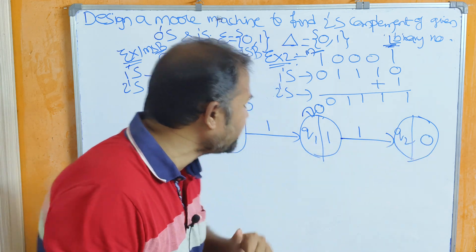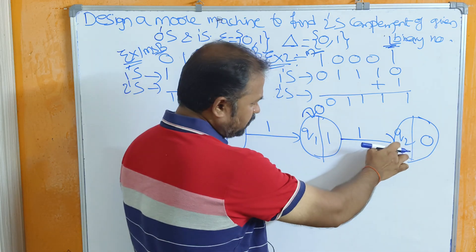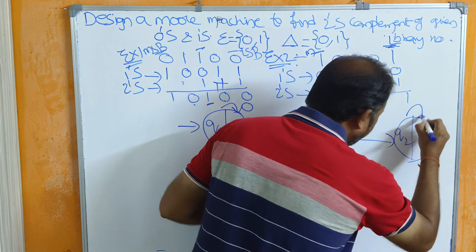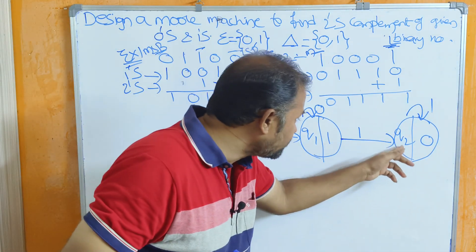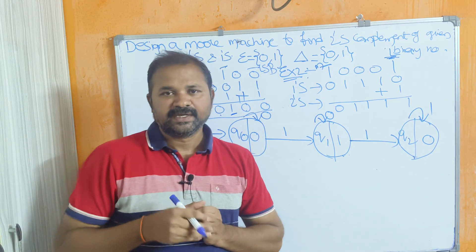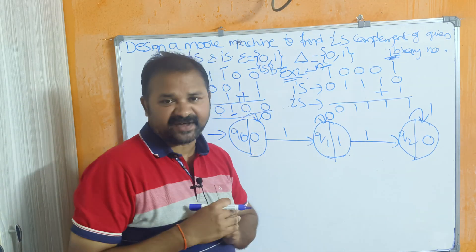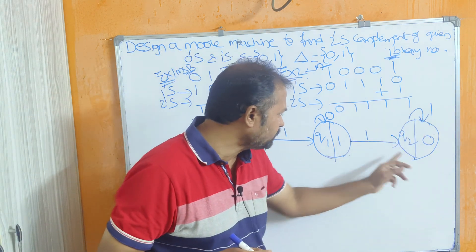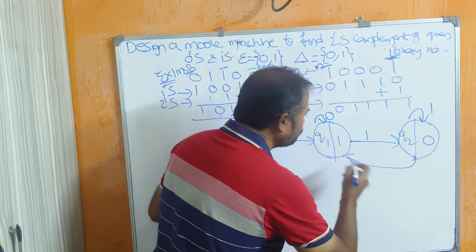Now we apply 0 and 1 on q2. The output of q2 is 0. If the input is 1, that is a self-loop on q2. If the input is 0 on q2, then the output is 1, so we backtrack to state q1 whose output is 1. This completes the Moore machine.